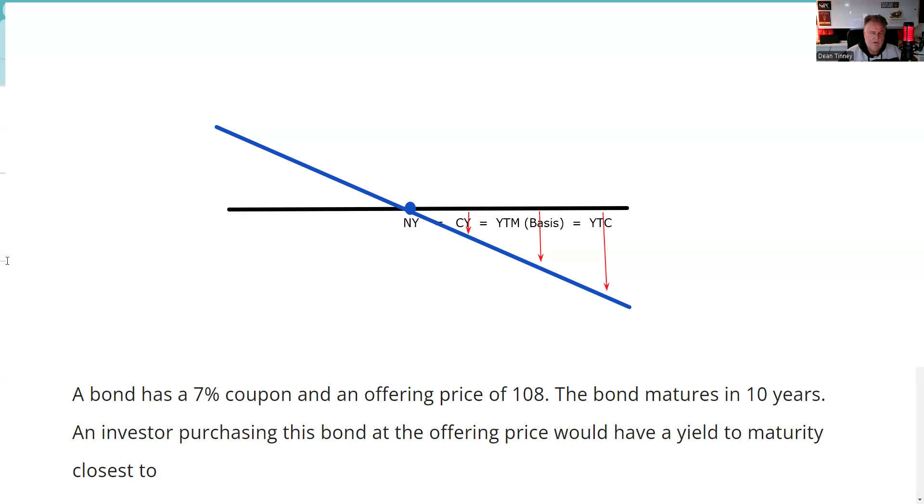And it's very likely this issuer would like to replace this higher cost debt at seven with lower cost debt at maybe six or whatever the case may be. All right. So we know we're looking for an answer less than seven. Maybe there's only one answer less than seven. I say, thank you very much.